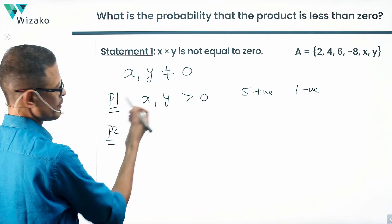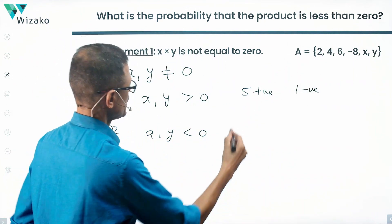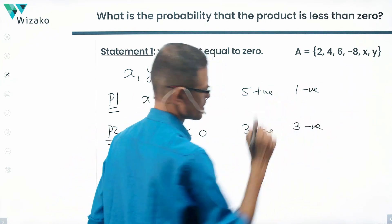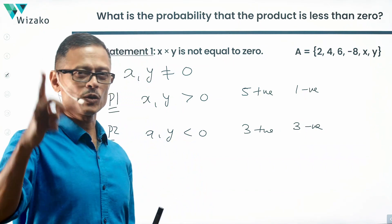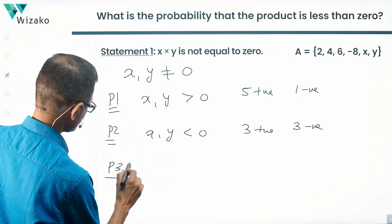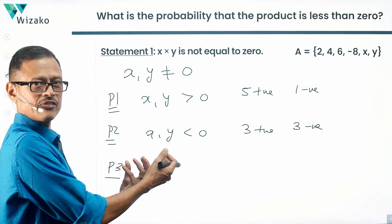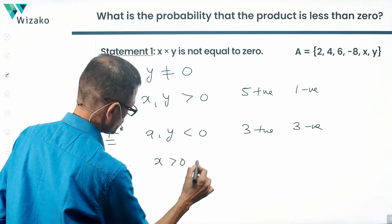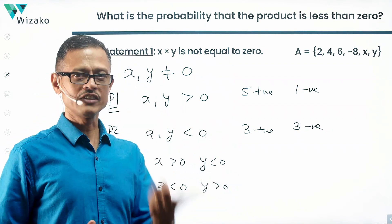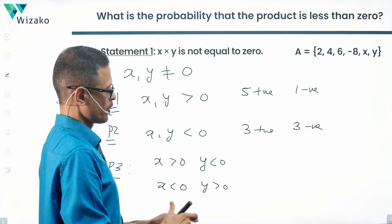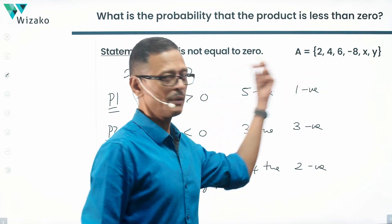Possibility 2: both X and Y are negative. Then 2, 4, 6 are positive and -8, X, Y are negative — three positive and three negative numbers. Possibility 3: one of X and Y is positive and the other is negative. In that case we'd have 2, 4, 6 plus one positive giving four positive numbers and two negative numbers.